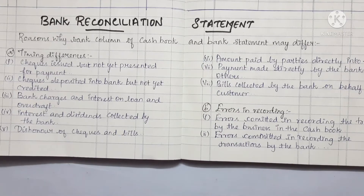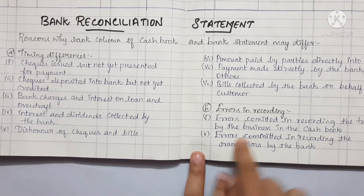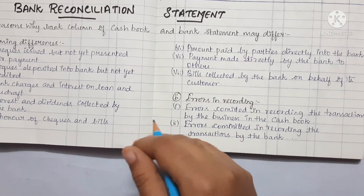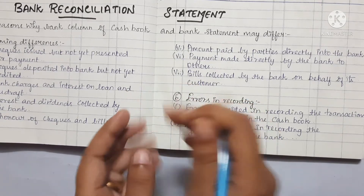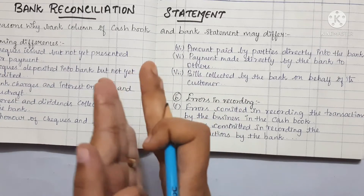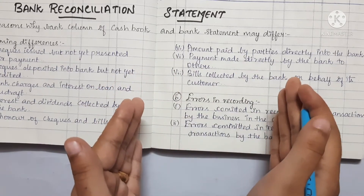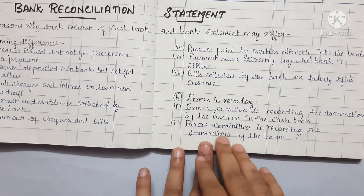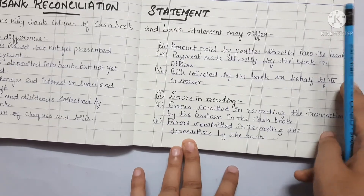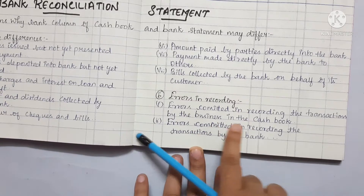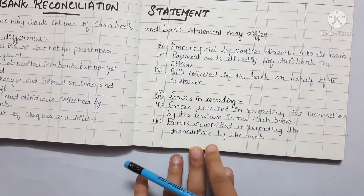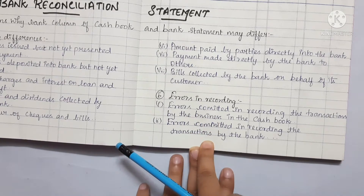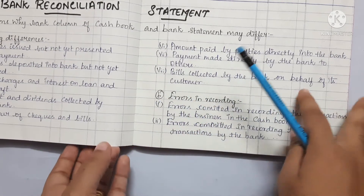Bills collected by bank on behalf of customer. These are the main points. These are the reasons for difference between cash book and bank statement. The first reason is time difference, and the second reason is error in recording. In cash book, we record entries at a different time. In the bank, there can be errors in the cash book or errors in the pass book. Here is the main point.